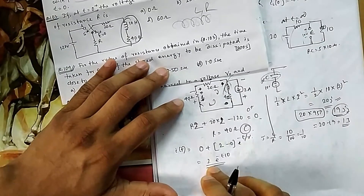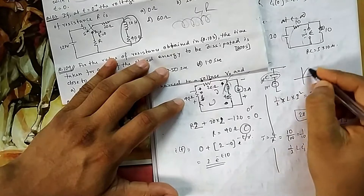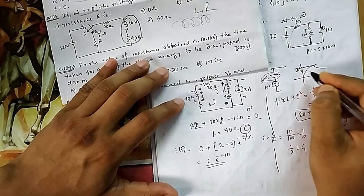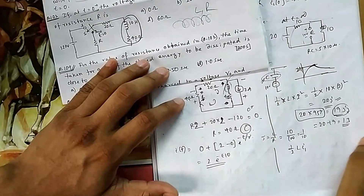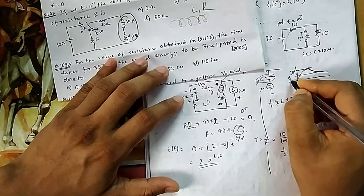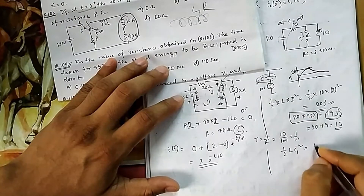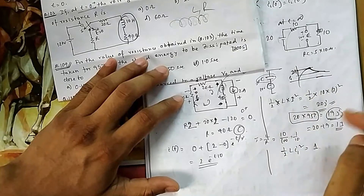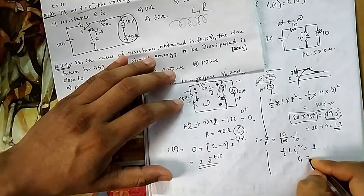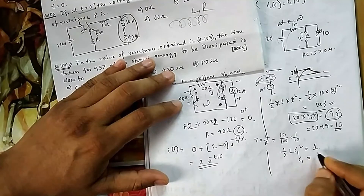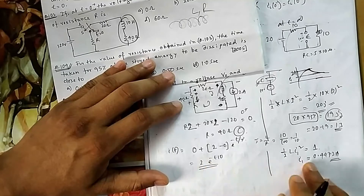The energy remaining is ½L·i₁² = 1 J. Solving: ½ × 10 × i₁² = 1, so i₁² = 0.2, giving i₁ = 1/√5 ≈ 0.4472 A. This is the current level at which 19 J has been dissipated. Now we need to find the time at which the decaying current reaches 0.4472 A.